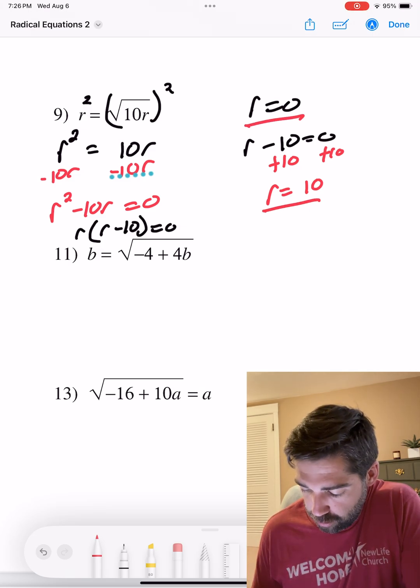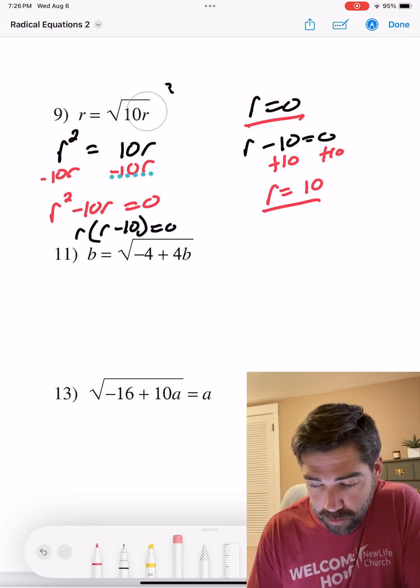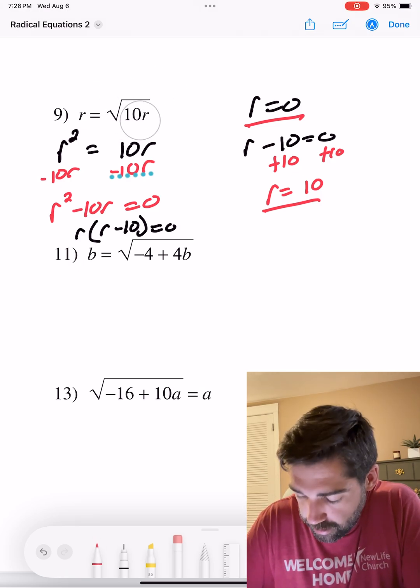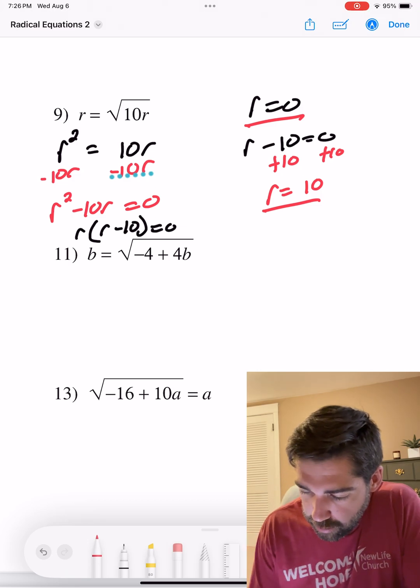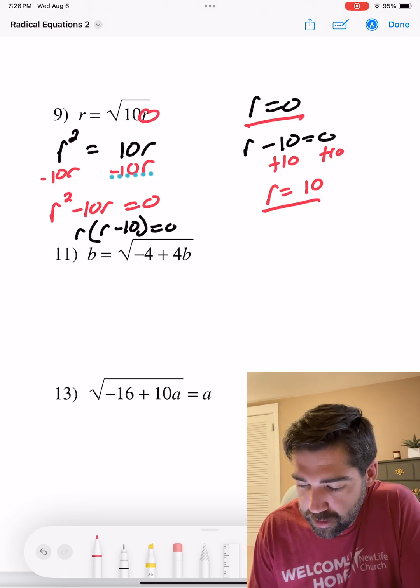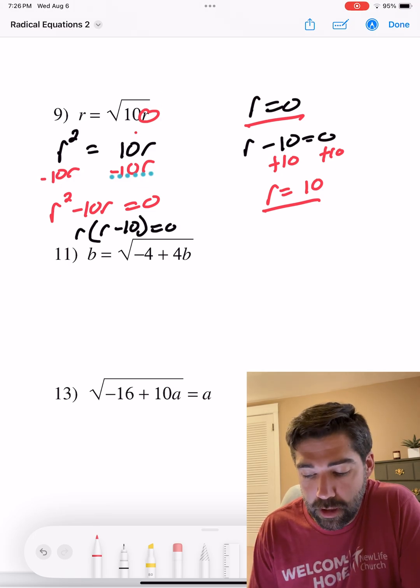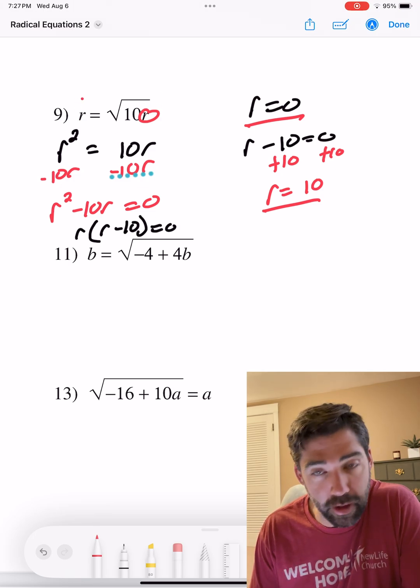Let's see which one works or which ones work. So if we were to plug in 10 here, pull this up, we plug in 10 for r, that would be 10 times 10, which is 100, square root equals 10. So that works.